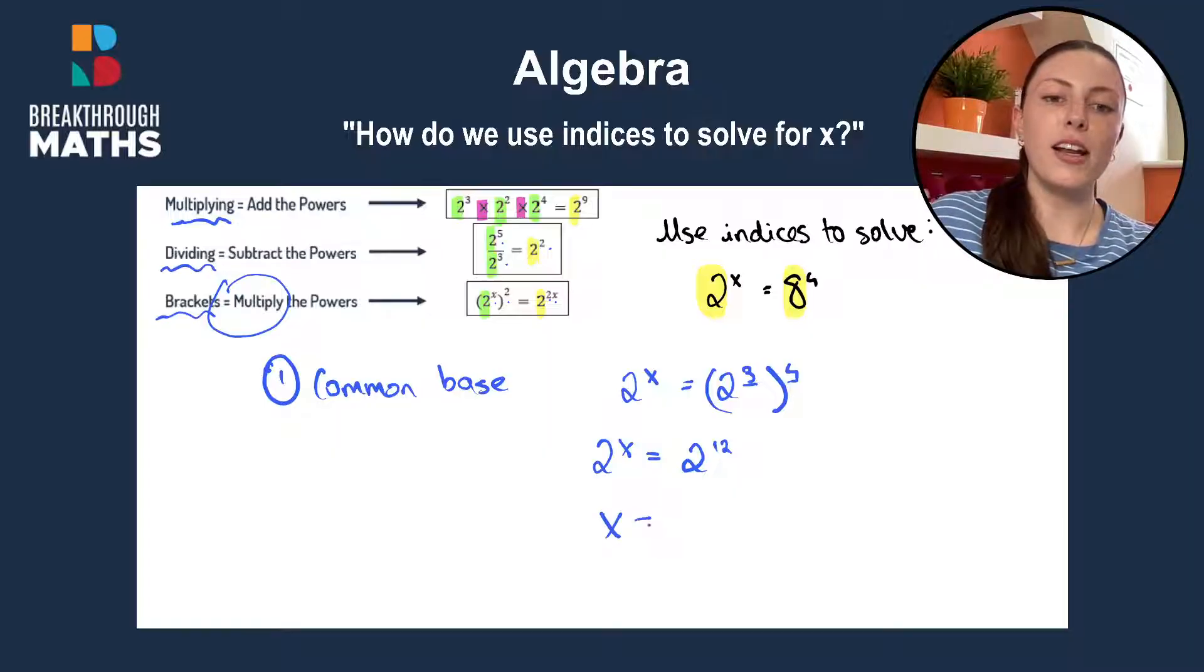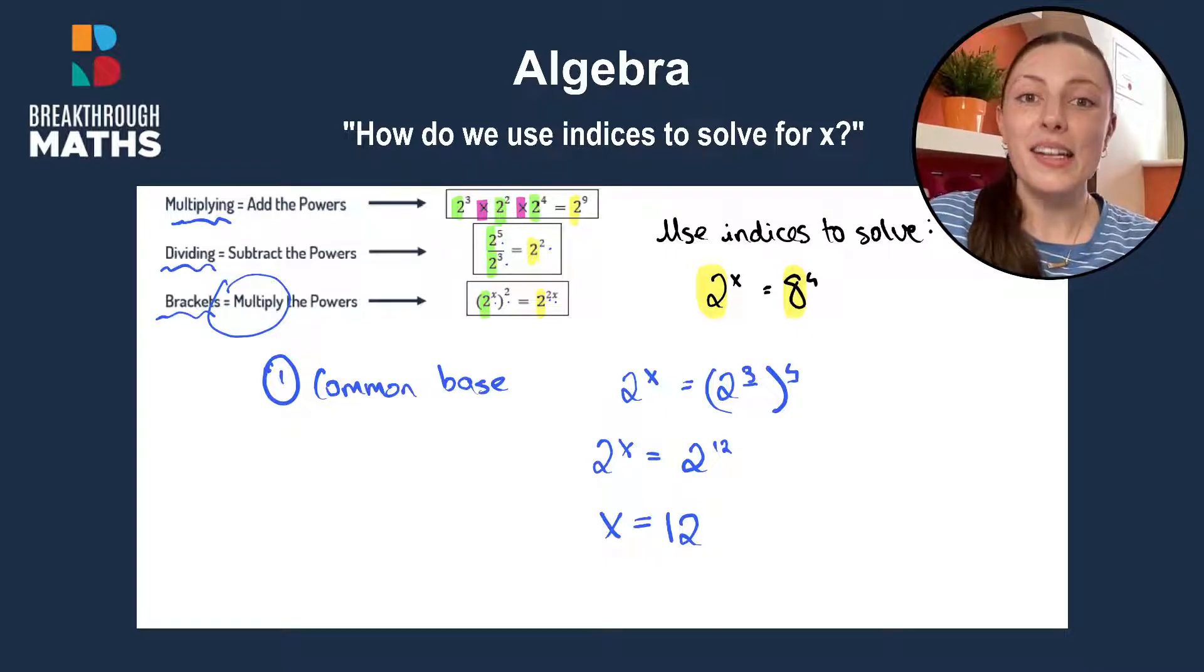And then this leaves us with our final answer. We can drop the common base and we're left with x is equal to 12. And that's how you use indices to solve for x.